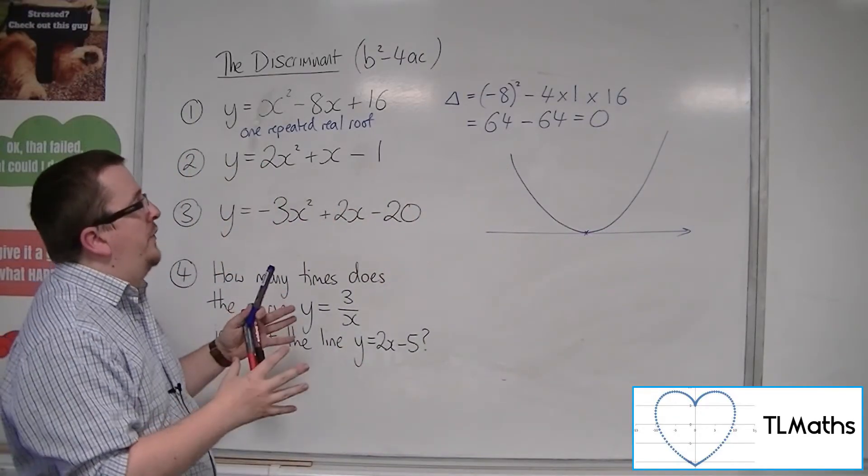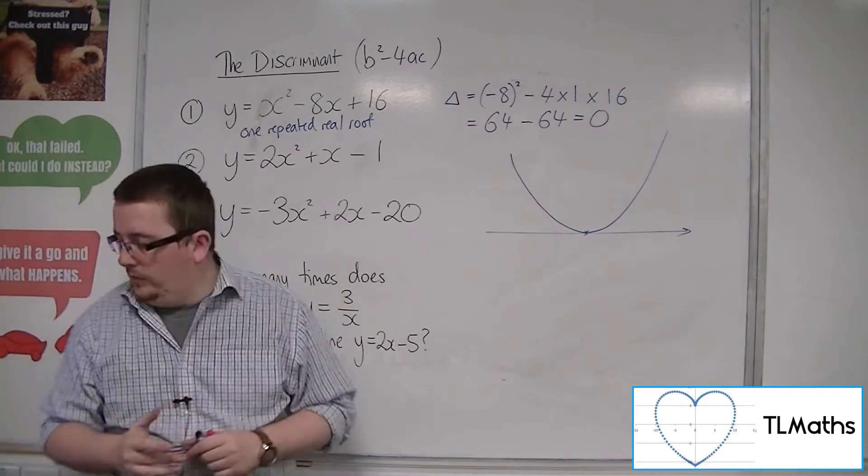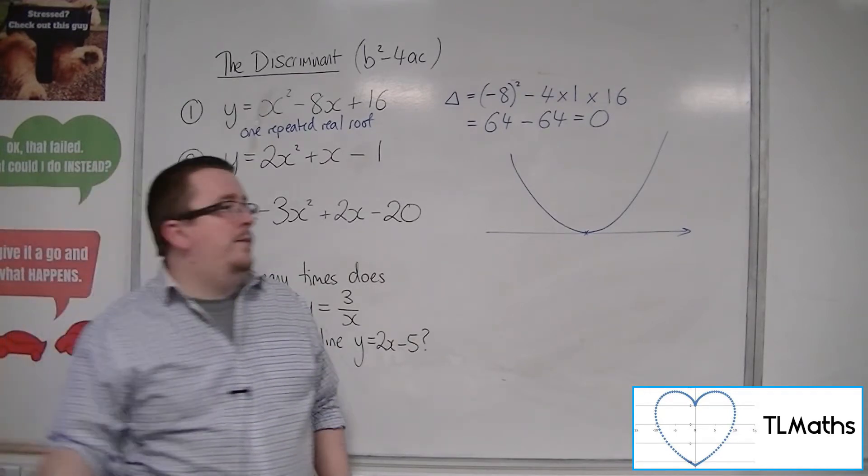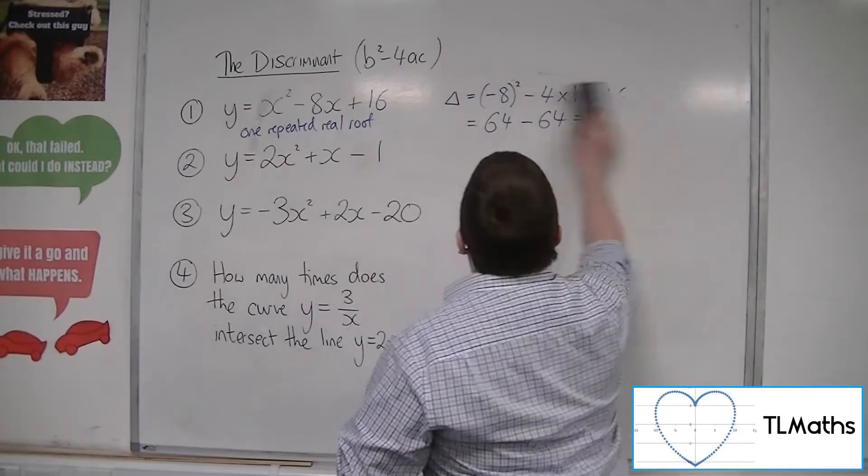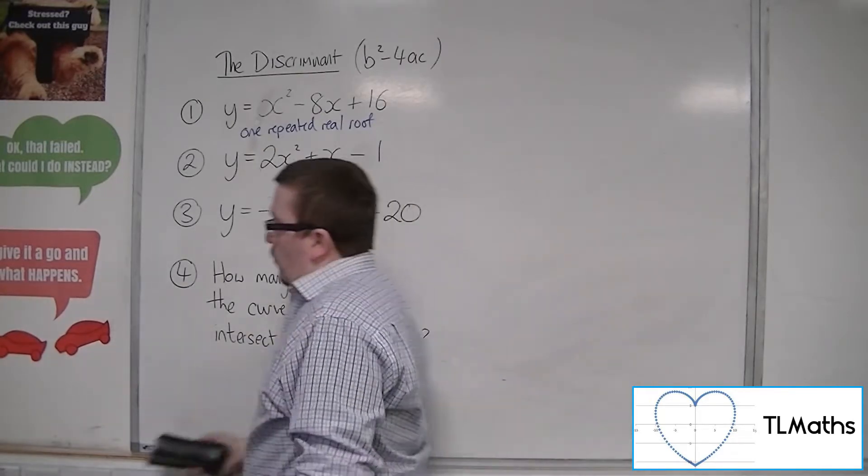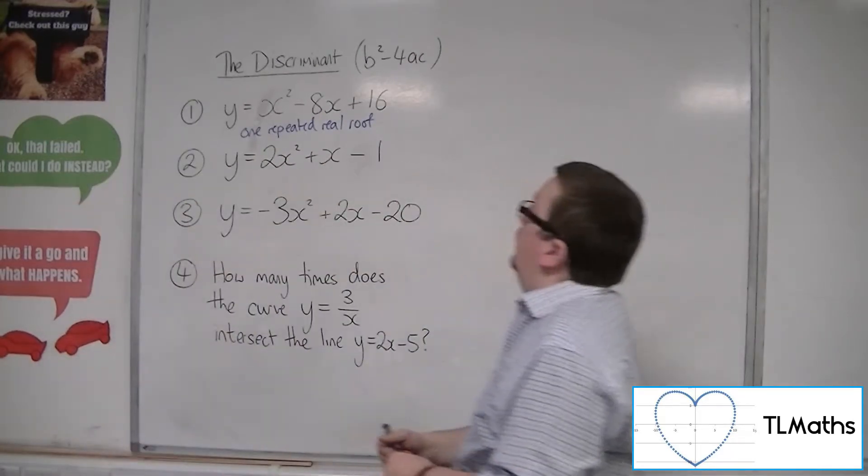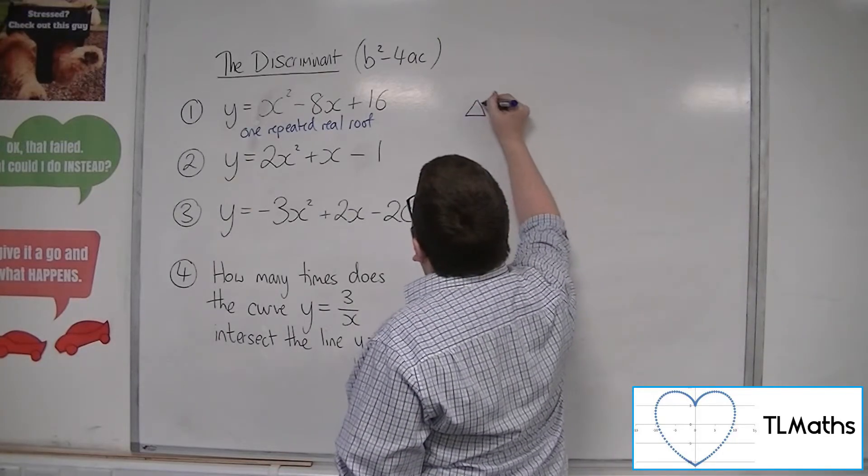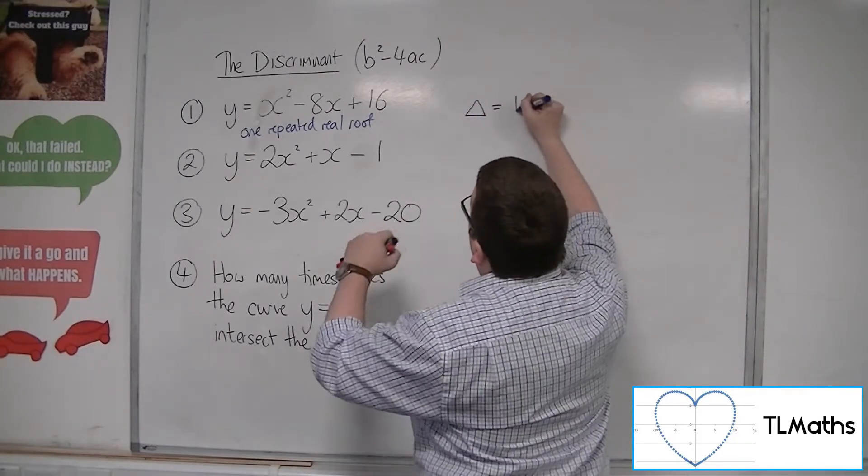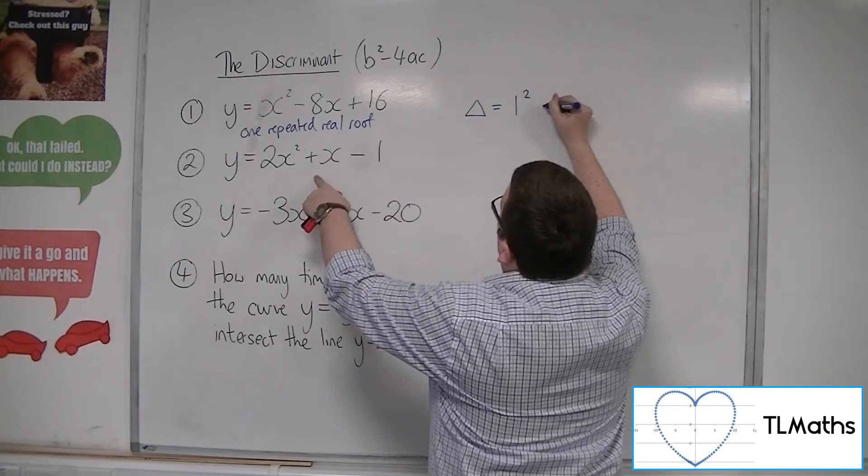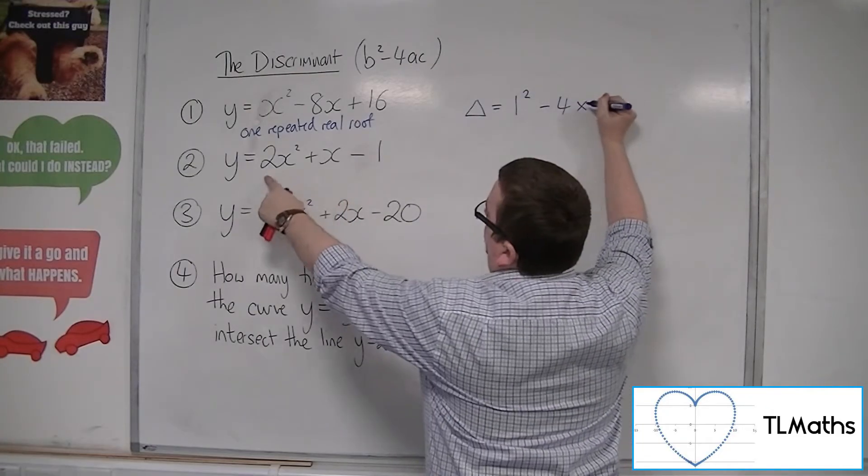OK. So that is the situation that we're looking at in this case. So if we have a look at number 2, we have y is equal to 2x squared plus x minus 1. So in this case, the discriminant is b squared, so 1 squared.